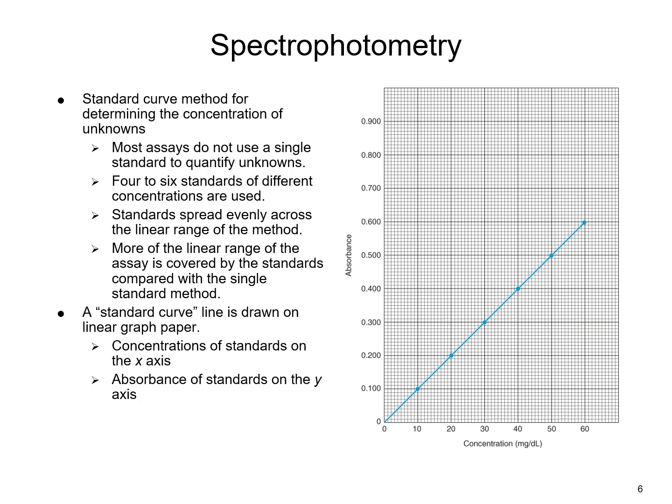You may be wondering why all of this is important. This is the basis for establishing the standard curve used on instrumentation to determine unknown values for patient samples. In the clinical laboratory, most assays do not use a single standard. Instead, four to six standards of different concentrations are spread evenly across the linear range of that particular method, covering more of the linear range compared to a single-standard method.